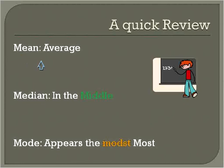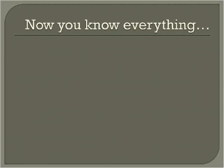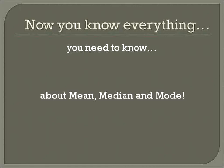Here's a quick review: the mean is the average, the median is the number in the middle, and the mode is the number that appears the most. Now you know everything you need to know about mean, median, and mode. Have a wonderful day.